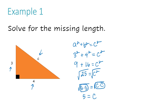So for this particular triangle, I have a leg length of 3, a leg length of 4, and the hypotenuse has a length of 5, which I calculated using the Pythagorean Theorem. The length of the missing side is 5.